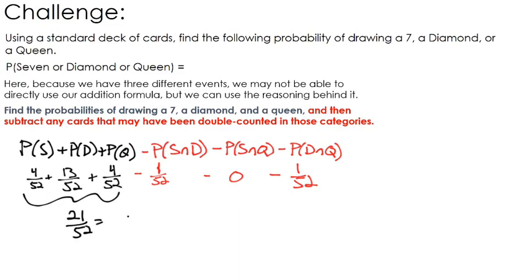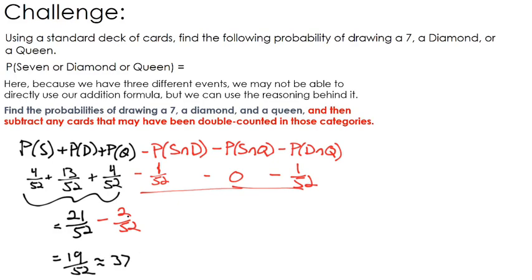Then we subtract 2 out of 52 for the double-counted cards. That gives us 19 over 52, which is roughly 37%. There are some tough problems there, but if you can do these, you can do everything we need you to do.